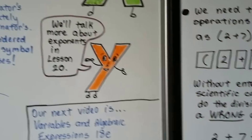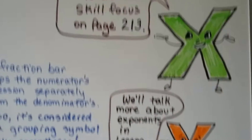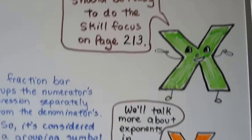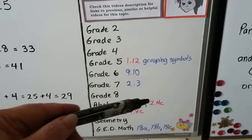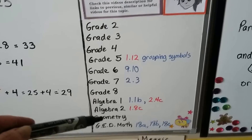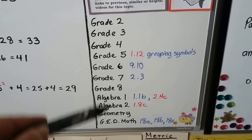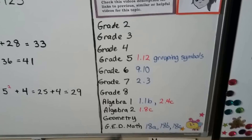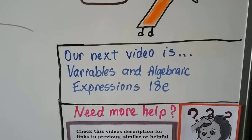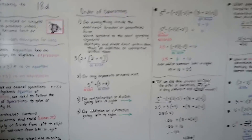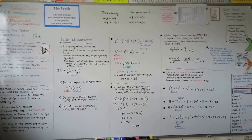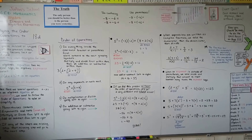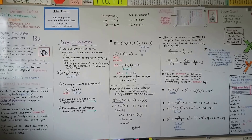I'm going to talk more about exponents in lesson 20 if you're confused. You should be ready to do the skill focus on page 213. If you need more help, I'll have links in the video description: lessons 1.12, 2.4c, and 1.8c for grouping symbols, plus order of operations videos and the previous parts of lesson 18. Our next video is variables and algebraic expressions — lesson 18E. I hope this was helpful. Hit the like button, and I'll see you next video.